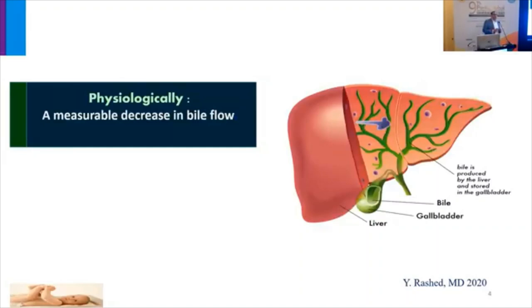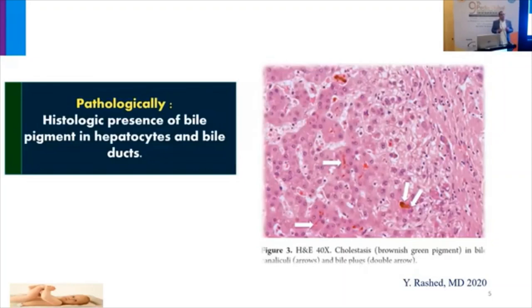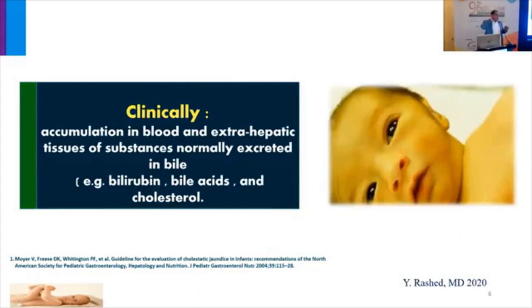Neonatal cholestasis is defined physiologically as a measurable decrease in bile flow. Histologically, we define it as bile pigment in the hepatocyte and other features like bile ductal proliferation and bile ductal plugs in the hepatocyte. Clinically, it involves accumulation of bile or any of its components. Bile is composed of many components — not bilirubin only. Bilirubin is only a small trace of bile; bile salt is a major component, along with phospholipid, cholesterol, and bilirubin. Accumulation of these substances in the blood can lead to clinical manifestations.